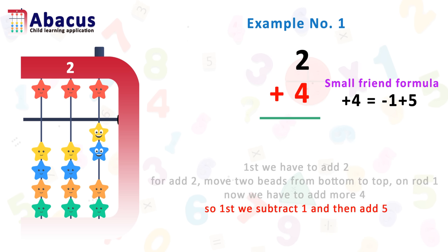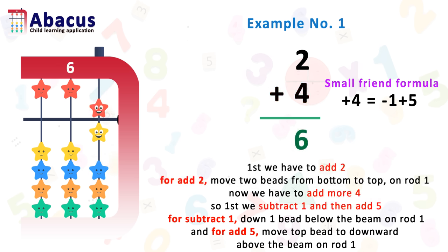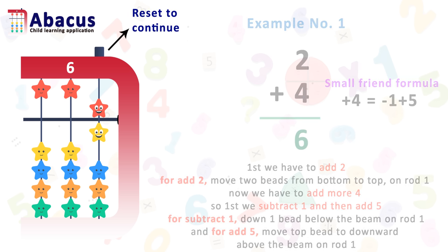So first we subtract 1 and then add 5. For subtract 1, move 1 bead below the beam down on rod 1. And for add 5, move the top bead downward above the beam on rod 1. Here we got the answer 6. To summarize: first we added 2 on rod 1, then for 4 we used the small friend formula minus 1 plus 5.